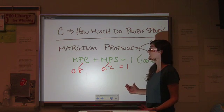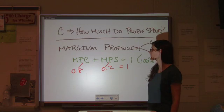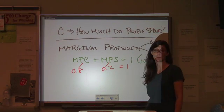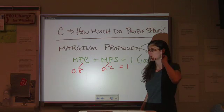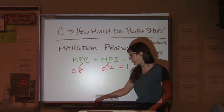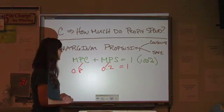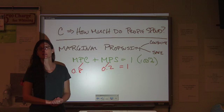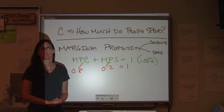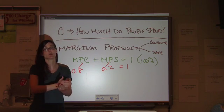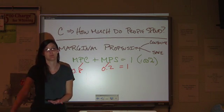What does that mean? It means that for the next dollar that the average consumer gets, they're going to spend 80 cents and keep 20. So, let's say, for example, that the government wants to increase consumer spending, and they cut taxes.